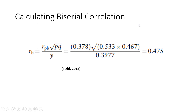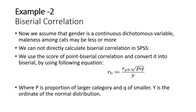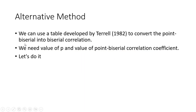Substituting the values into the formula gives us a biserial correlation coefficient equal to 0.475. This seems quite cumbersome and complex, so we have a simpler solution: we can use a table developed by Terrell (1982) to convert the point biserial correlation into the biserial correlation. We need the value of p, which is 0.533, and the value of the point biserial correlation coefficient.